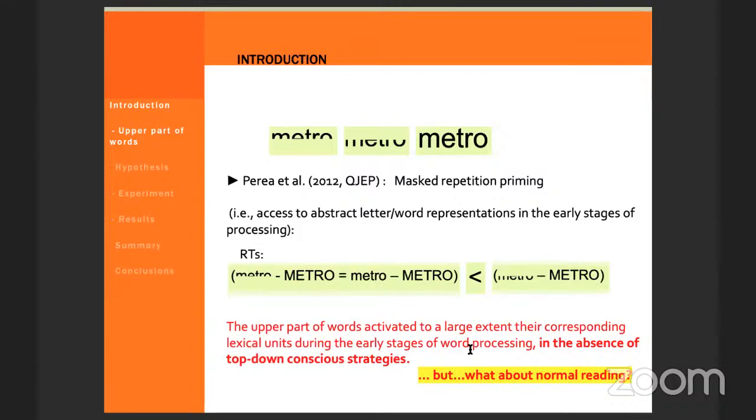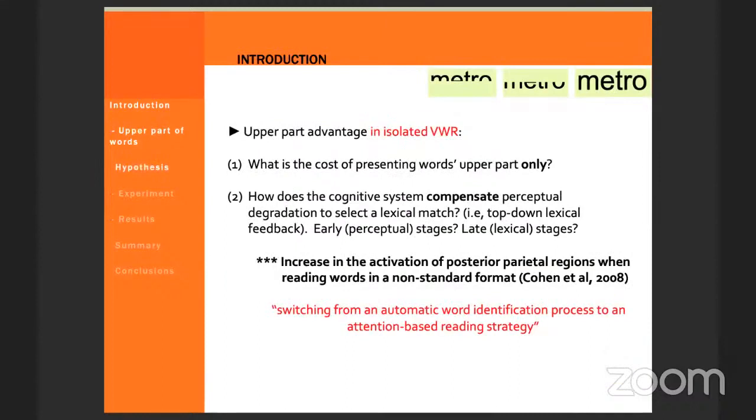But note that the masked priming experiments measure recognition latencies of the same intact target preceded by a prime, either the upper or the lower part. So we wonder what about normal reading? What about isolated word identification? Does the cognitive system compensate perceptual degradation to select a lexical match? Note that there is fMRI evidence on the increased activation of posterior parietal regions when reading words in a non-standard format. And this activity has been interpreted as a switch from an automatic word identification strategy to an attention-based reading strategy.